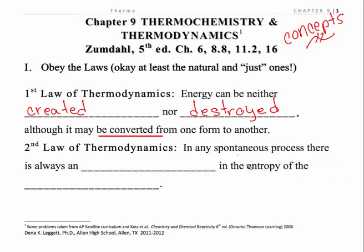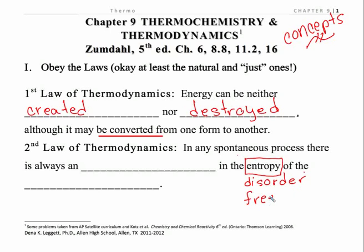The second law of thermodynamics brings in a term that you've heard before, and we're going to talk about it in a little bit more detail — and that's the concept of entropy. Entropy is a measure of the disorder. I like to talk about freedom, because we can discuss entropy in terms of freedom of motion and freedom of arrangements. Some people like to think of it in terms of probabilities, so we'll get into it in a little bit more detail later.